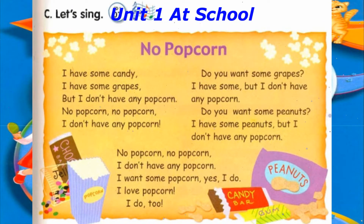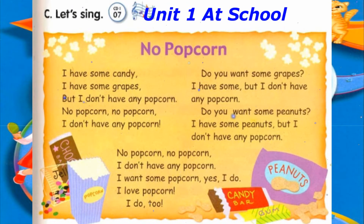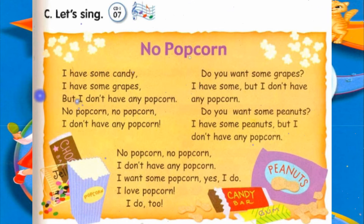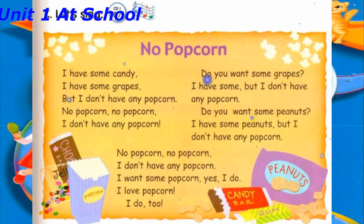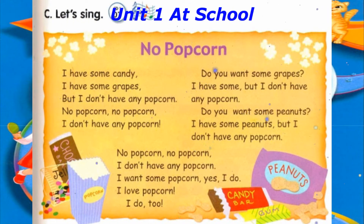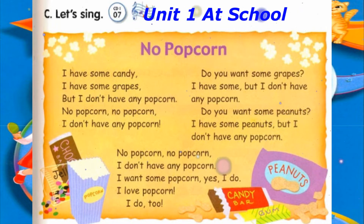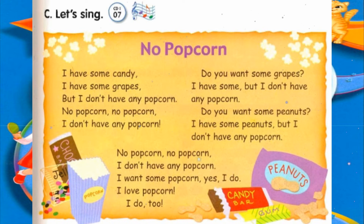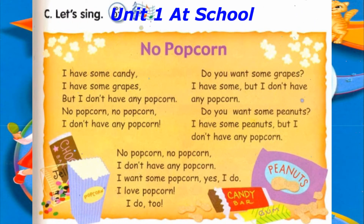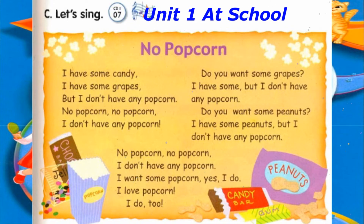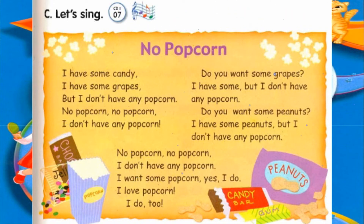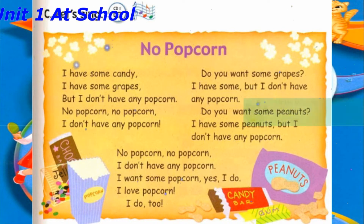Track 7. C. Let's sing. No popcorn. Popcorn. I have some candy. I have some grapes. But I don't have any popcorn. But I don't have any popcorn. No popcorn. No popcorn. I don't have any popcorn.